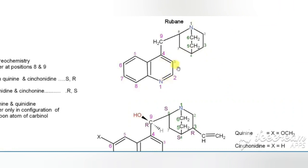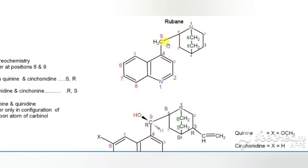Cinchonine and cinchonidine are desmethyl derivatives of quinidine and quinine respectively. In the case of quinine, the numbering is based on the parent structure called rubane. Rubane has a quinoline nucleus and a quinuclidine nucleus connected by means of a methylene bridge.